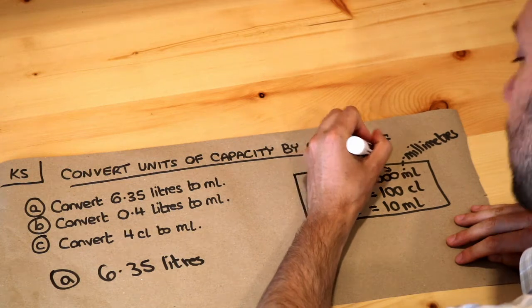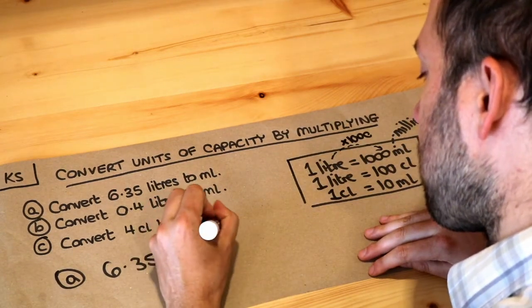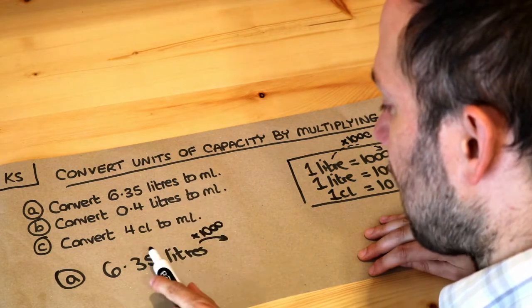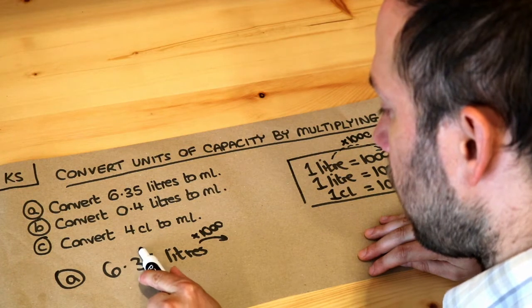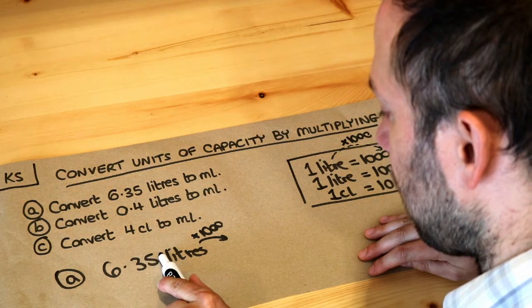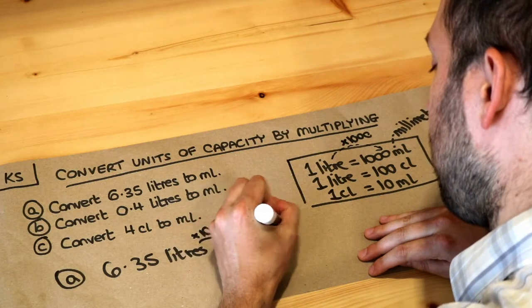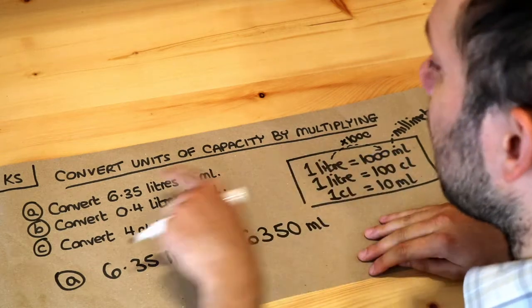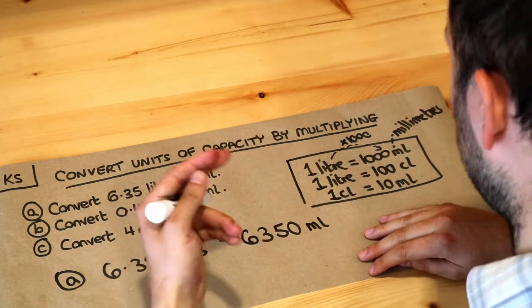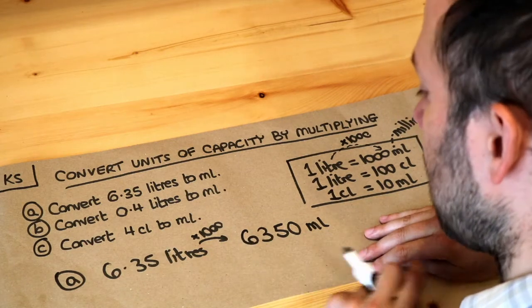We're timesing by a thousand, so if we times this by a thousand then we move the decimal point three places because it's three zeros. So one, two to get to 635, and then we have to add a zero on the end. So it'd be 6,350 milliliters. And if you think about it, if one liter is a thousand milliliters then six liters would be 6,000 milliliters. So 6.35 is going to be a bit more than 6,000 milliliters.